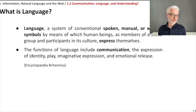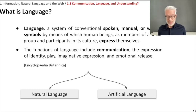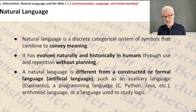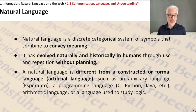As computer scientists we should distinguish between natural language — the language in which I am talking to you — and artificial language. Natural language is defined as a discrete categorical system of symbols that combine to convey any sense of meaning. The most important property of natural language is that it has evolved naturally and historically in humans through use and repetition without explicit planning. It evolved over time the way it is today. A natural language is different from a constructed or formal language, which is referred to as an artificial language.